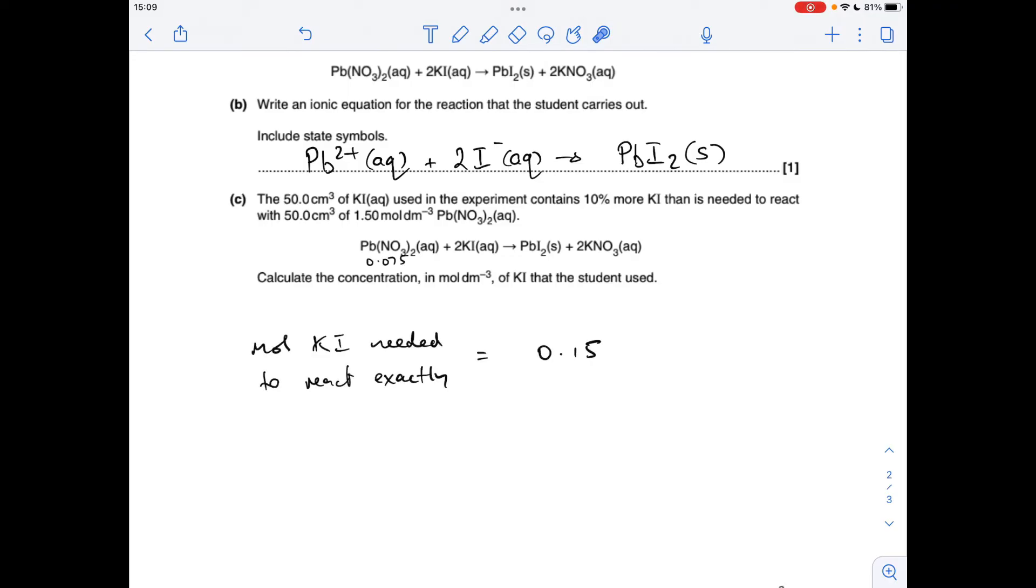And for the final part of the question, we already worked out in the first part A there's 0.075 moles of lead nitrate, so the moles of KI needed for exact reaction would be double that from the ratio, so 0.15. So to find the extra 10% I've just multiplied 0.15 by 1.1.